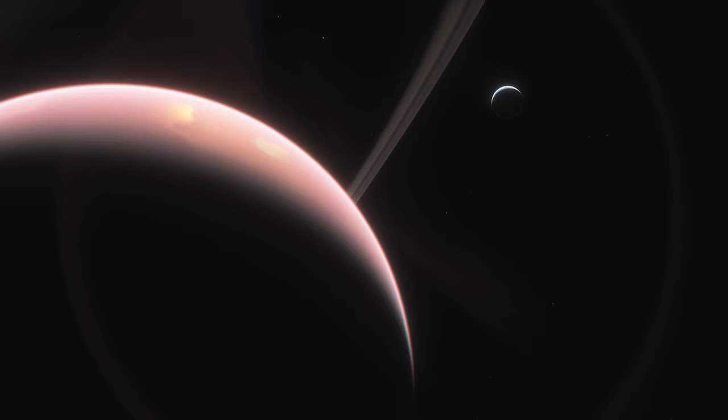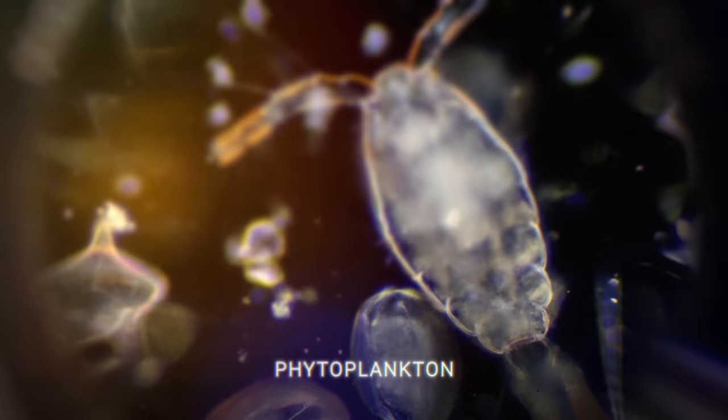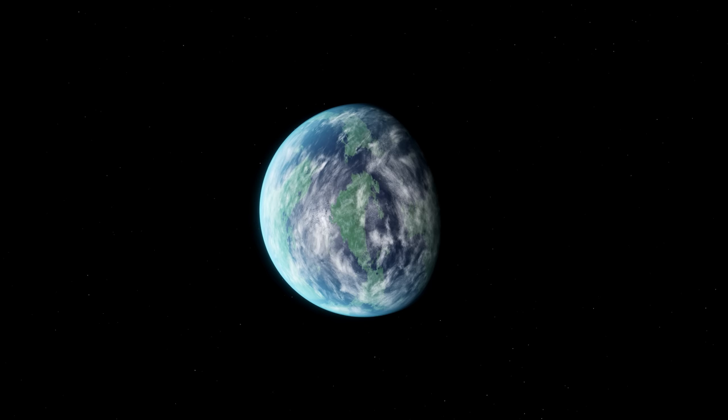One of the most interesting aspects of studying the K2-18b atmosphere is the potential presence of dimethyl sulfide or DMS. On Earth, this compound is often produced by marine phytoplankton and serves as a potential biosignature. But could its presence on an exoplanet like K2-18b also indicate life?